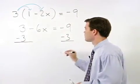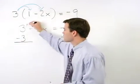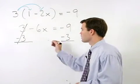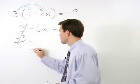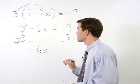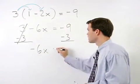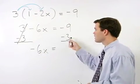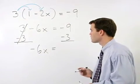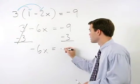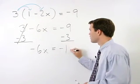On the left, 3 minus 3 cancels, and we are left with negative 6x. On the right, negative 9 minus 3 simplifies to negative 12.